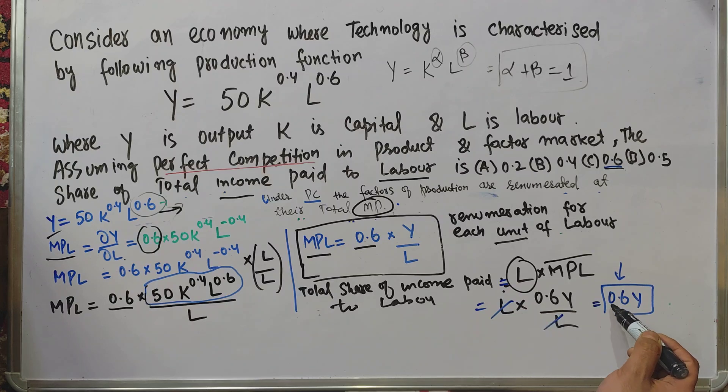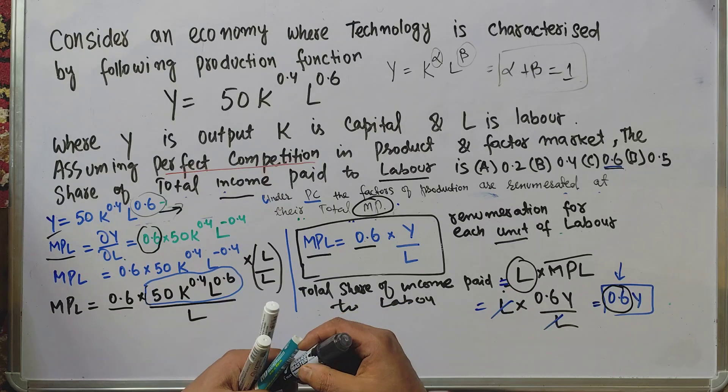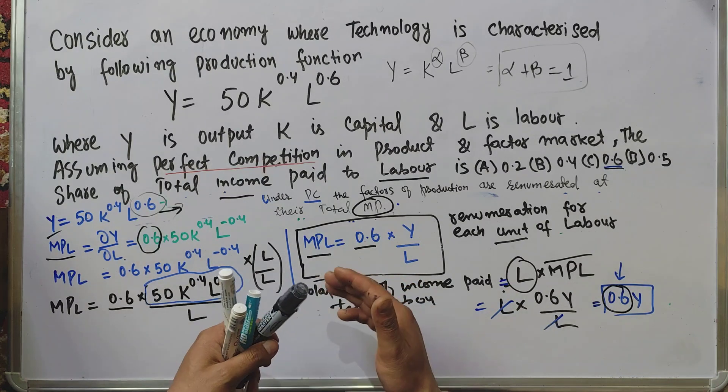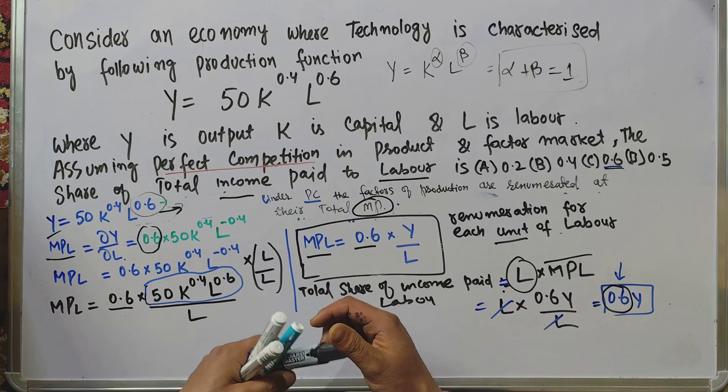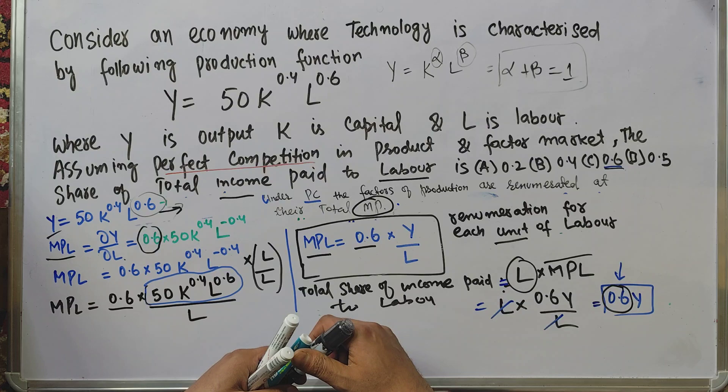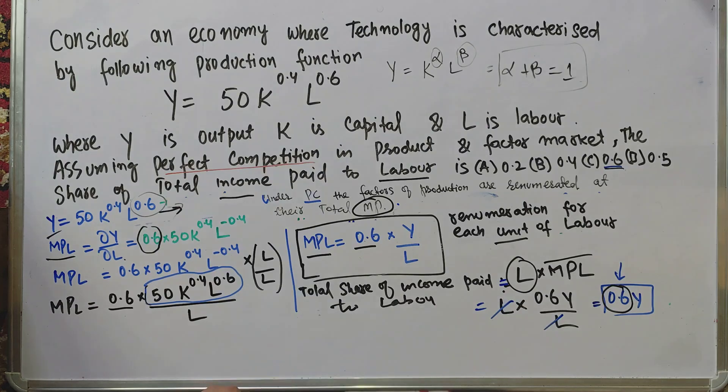L and L cancel out, giving us 0.6Y. This means 60% of total income is paid to labor. I hope I made myself clear in this video. Thank you.